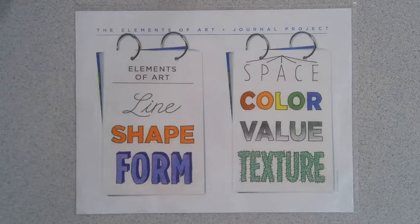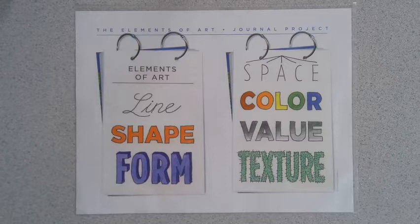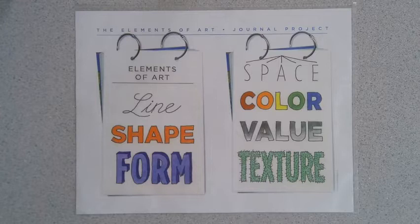Value shows the lightness or the darkness of a color. And then we have texture, which can be real texture or implied texture, which is the way that something feels.